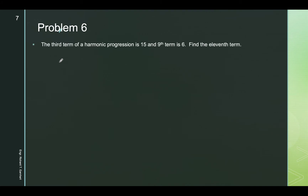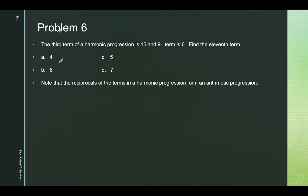The third term of a harmonic progression is 15 and the ninth term is 6. Find the 11th term. Note that the reciprocals of the terms in a harmonic progression form an arithmetic progression. So for the HP, the third term is 15 and the ninth term is 6. For the corresponding AP: A3 equals 1 over 15, and A9 equals 1 over 6.